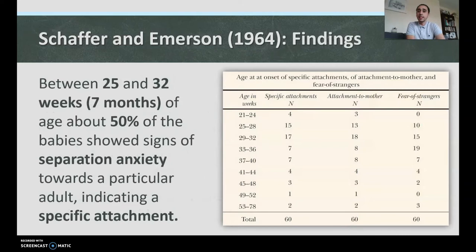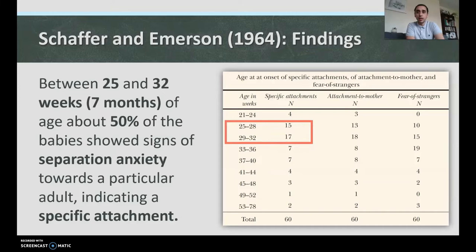Here's what the research found. Between 25 and 32 weeks — around seven months of age — about 50% of the babies showed signs of separation anxiety towards a particular adult, indicating a specific attachment. Some were a little bit younger, some a little bit older, but the majority showed signs of separation anxiety around seven months old. That is generally considered the time when most infants start to form attachments.